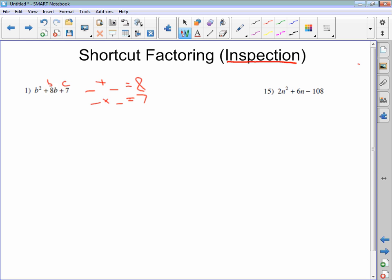There's only two numbers that multiply to give you 7: 7 and 1. You always want to look for the multiplying factors first. 7 and 1 also add to give you 8. So your two factors in this case are b plus 7, b plus 1.